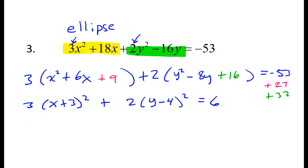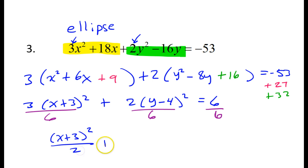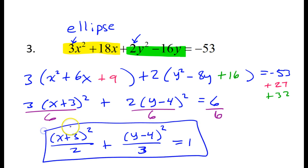The standard form equation of an ellipse needs a 1 on the right side, so I need to divide by 6. Dividing everything by 6: 3 goes into 6 twice, giving me x plus 3 squared over 2. And 2 goes into 6 three times, giving me y minus 4 squared over 3, equals 1. This is the standard form equation of my ellipse.